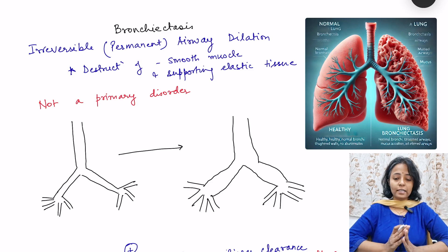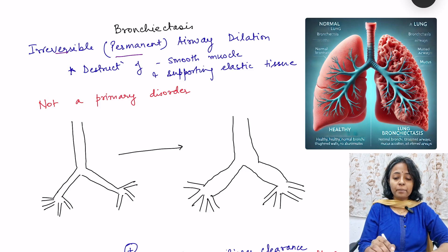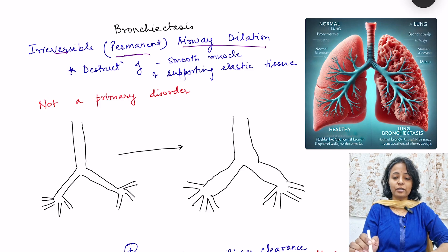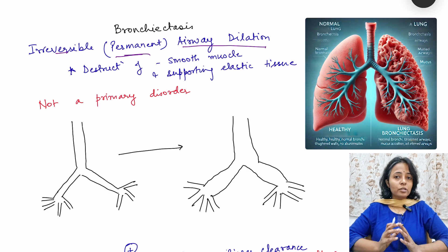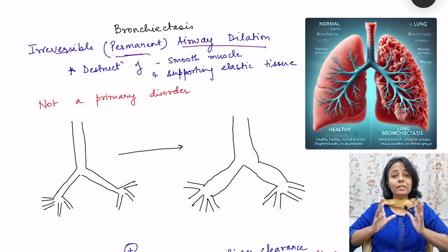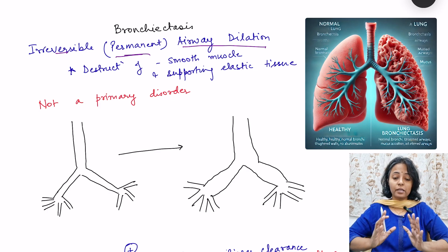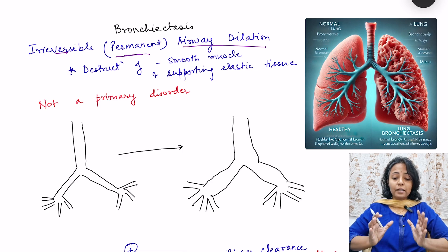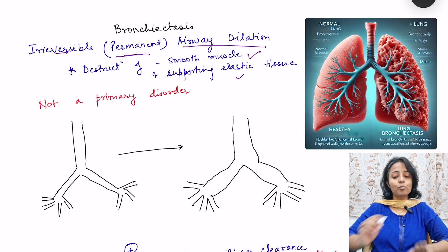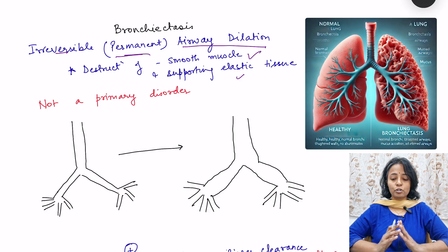What is bronchiectasis? It is irreversible or permanent airway dilation — an airway dilation which cannot be reversed. Once it happens, it will be there. Now why does it happen? That is because of destruction of smooth muscle and supporting elastic tissue.